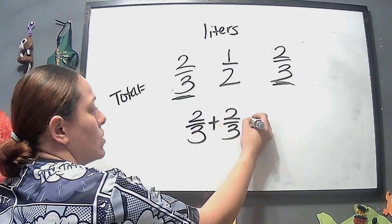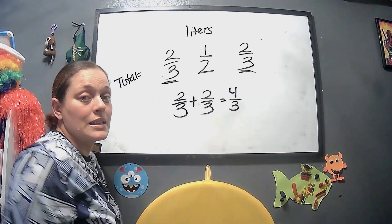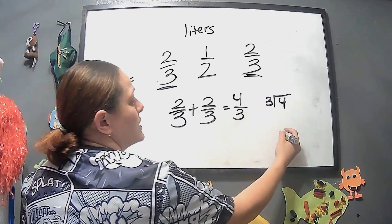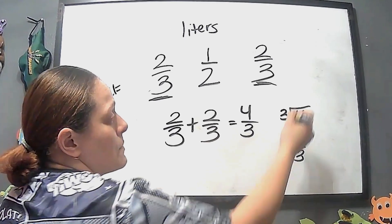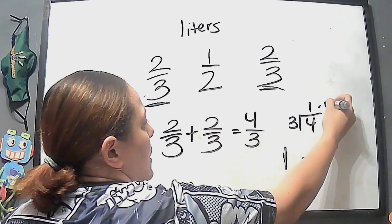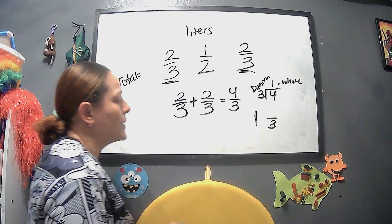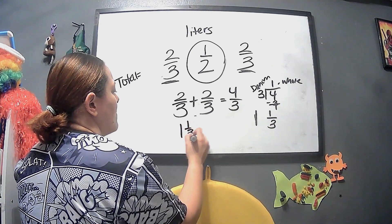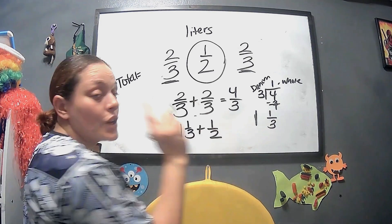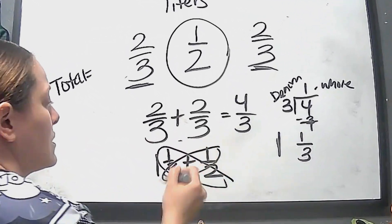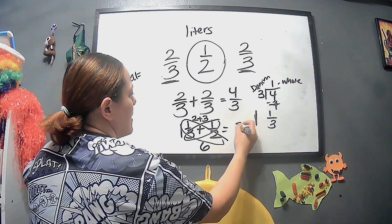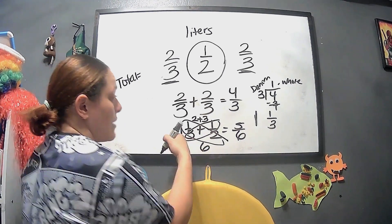6 times 4 is 24. We have to worry about the fractions that have the same denominator — the denominator stays the same. Now we have an improper fraction, so we change it to a mixed number. We do 3 into 4: 3 goes into 4 one time — that's our whole number — with a remainder of 1 as the numerator and 3 as the denominator, giving us 1 and 1 third. Using the butterfly method with 1 half: 1 times 2 is 2, 3 times 1 is 3, denominator is 3 times 2 which is 6 — so we have 5 over 6, giving us 1 and 5 sixths.